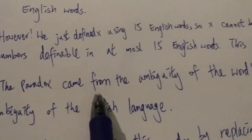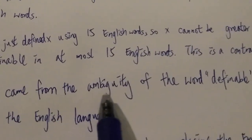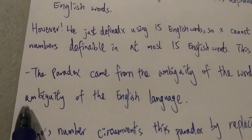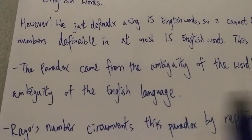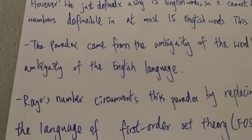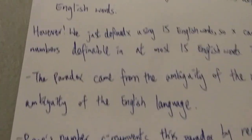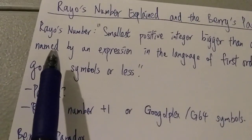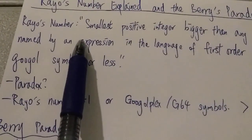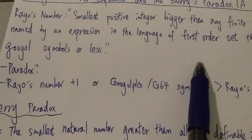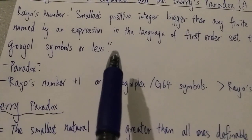So this paradox came from the ambiguity of the word definable and more importantly the ambiguity of the English language itself. So Rayo's number is kind of similar in some sense.